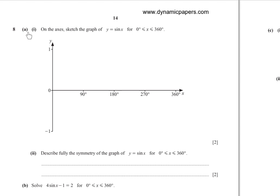Number 8(a): On the axes sketch the graph y equals sin x for 0 less than or equal to x less than or equal to 360 degrees. The graph has maximum 1 and minimum negative 1, with period 360. Key points: (0, 0), (90, 1), (180, 0), (270, negative 1), (360, 0). Join the points with a smooth curve.